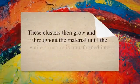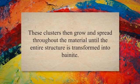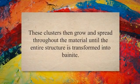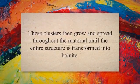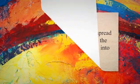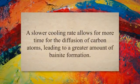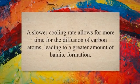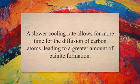The transformation of austenite to bainite can occur in two stages: nucleation and growth. During nucleation, small clusters of ferrite and cementite form within the austenite matrix. These clusters then grow and spread throughout the material until the entire structure is transformed into bainite. The cooling rate of the steel plays a significant role in the formation of bainite. A slower cooling rate allows for more time for the diffusion of carbon atoms, leading to a greater amount of bainite formation.